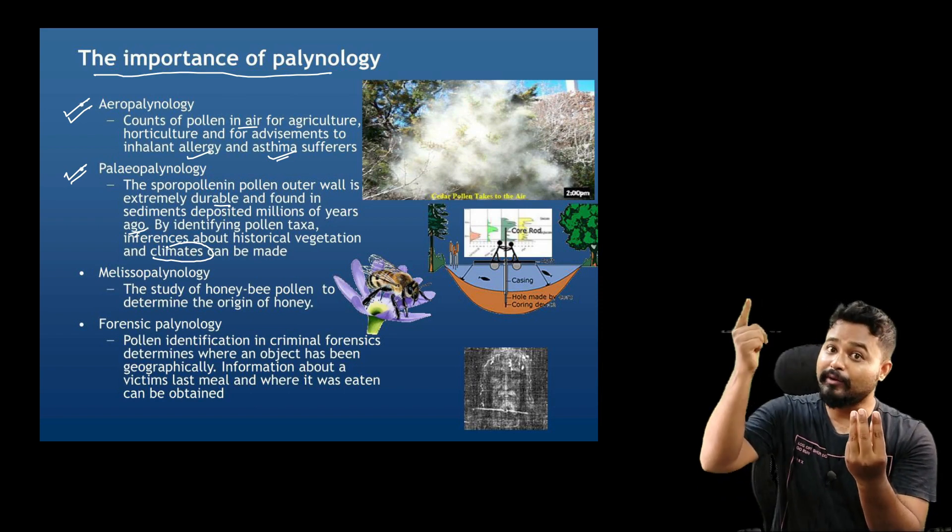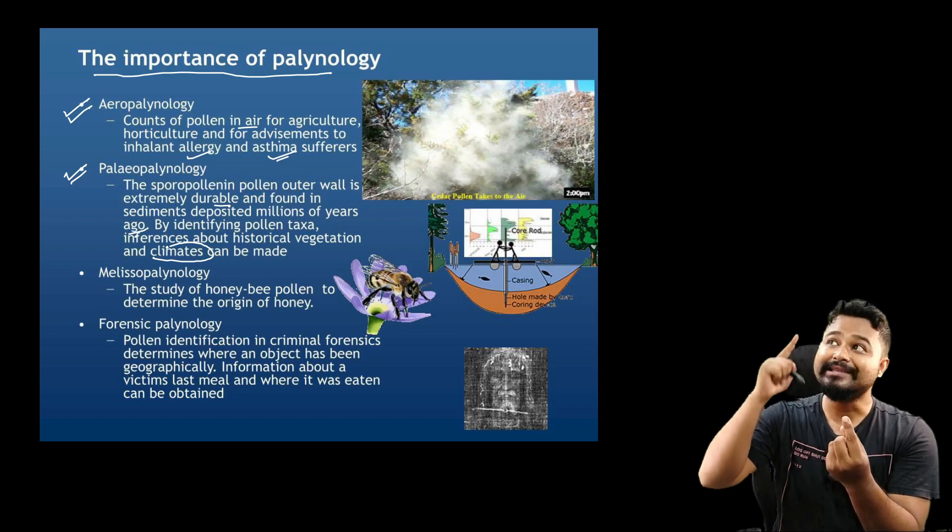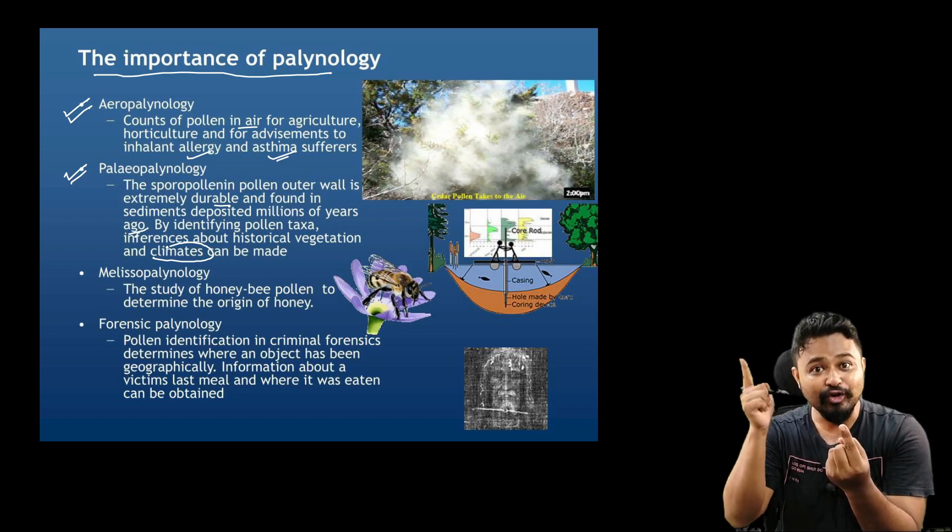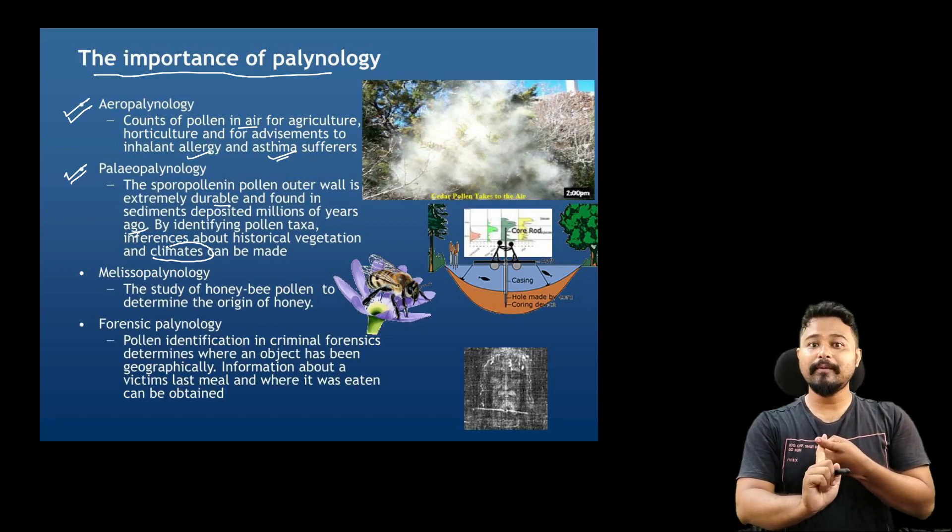For example, certain kinds of plant pollen give us ideas about what kind of climate existed at that time historically. We can study climate and vegetation historically.